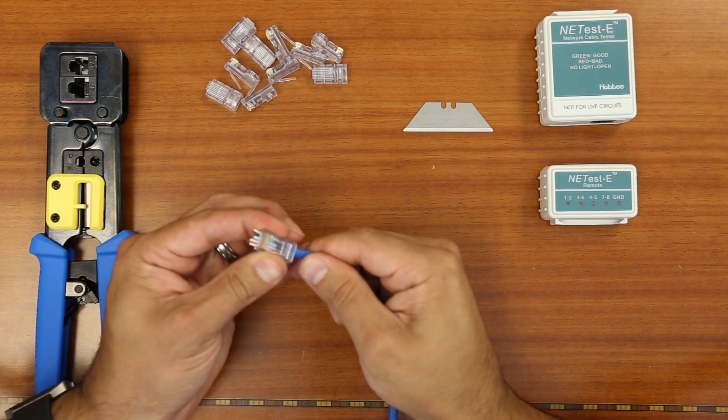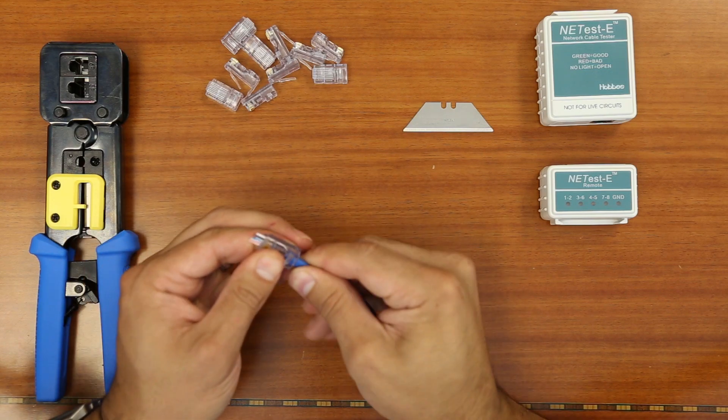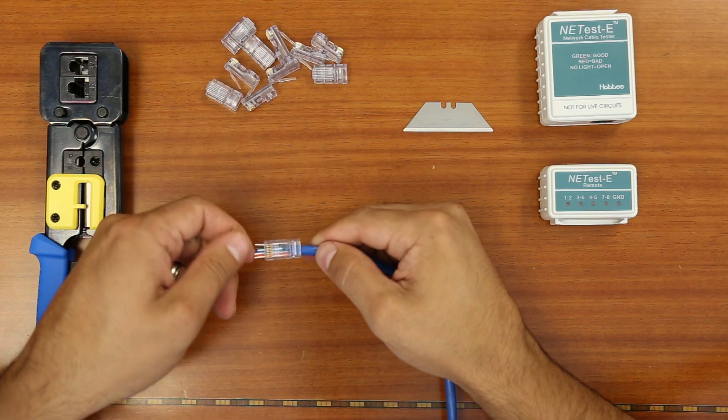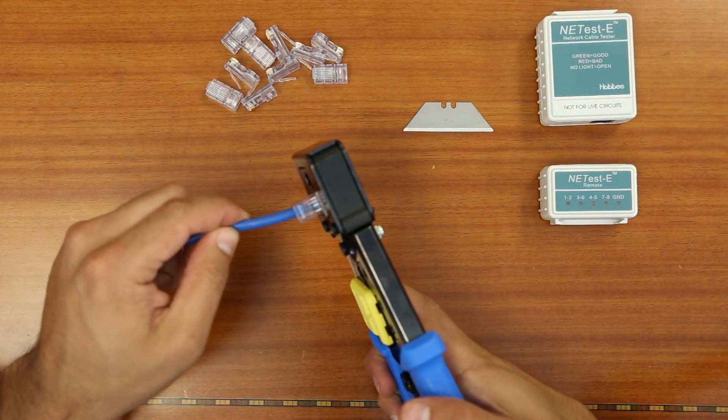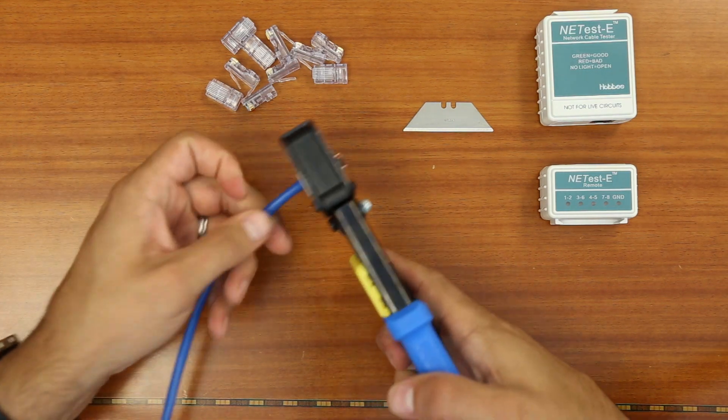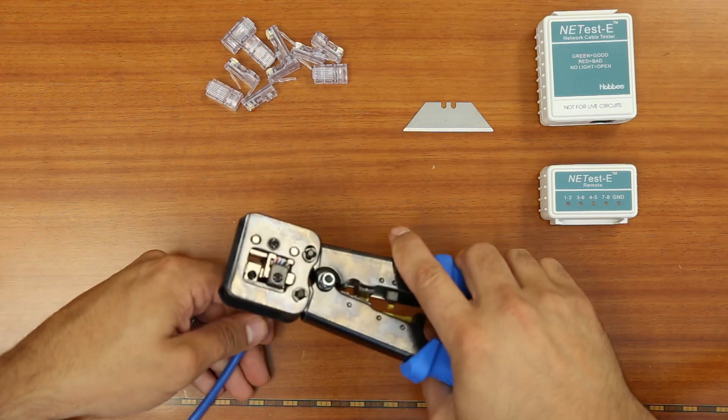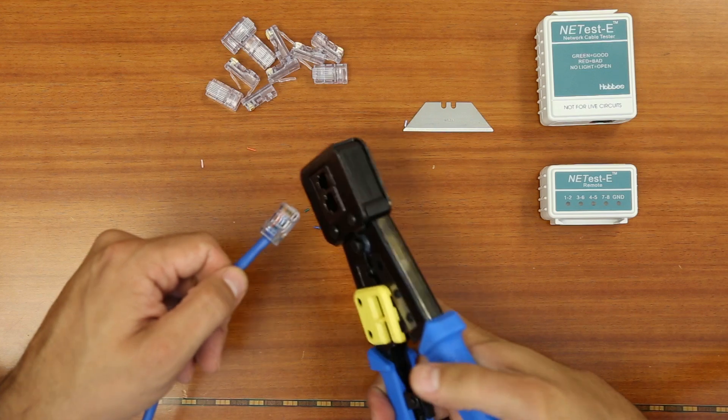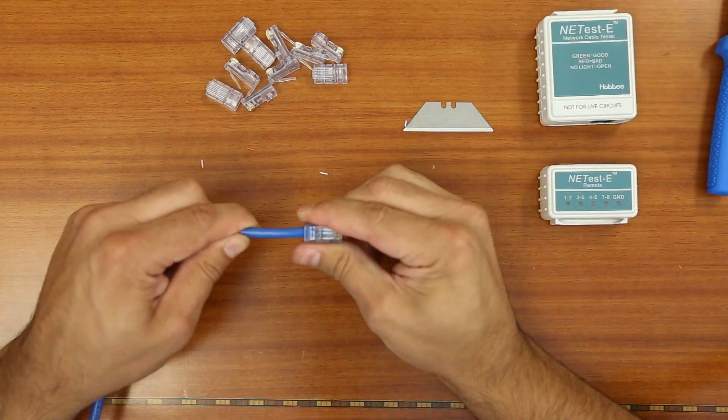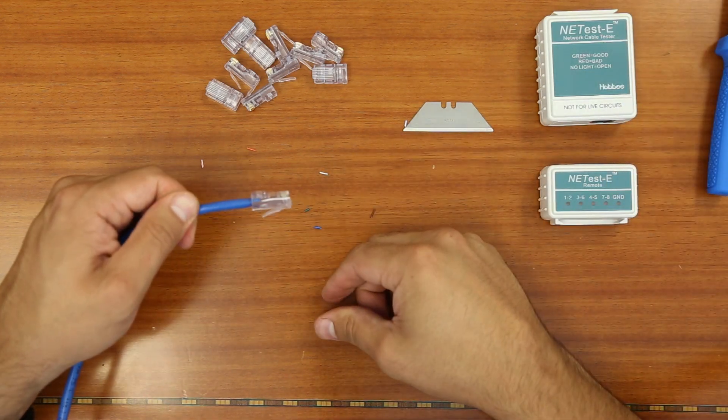With the wires inserted through the head of the RJ45, we are now ready to crimp and trim the excess wires. Cable Wholesale carries a tool specifically designed to work alongside these connectors. The tool features a blade at the end that will crimp and cut all in one motion. A traditional crimp tool will work, however, you will just need to trim the excess wire yourself.